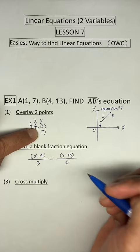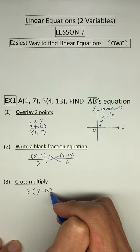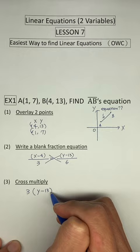Then we cross multiply like this. We got 3 times y minus 13, and 6 times x minus 4, and we can simplify. And we can get an equation like this. Finish. This is OWC.